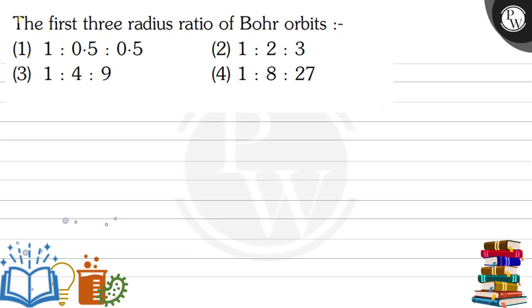Hello bachau, let's read the question. The first 3 radius ratio of Bohr's orbits. We have 4 options here. Option 1: 1 is to 0.5 is to 0.5. Option 2: 1 is to 2 is to 3. Option 3: 1 is to 4 is to 9. And option 4: 1 is to 8 is to 27.